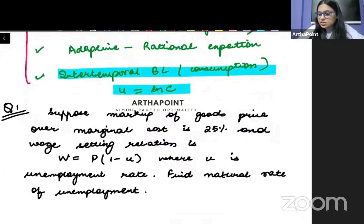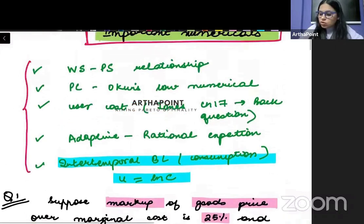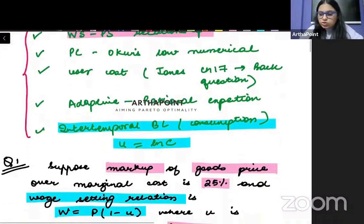So this example is from weight setting, price setting relationship. It says that there is a markup of goods and the markup is 25 percent. And then they have given you a weight setting relationship. And they are asking you to calculate the natural level of unemployment. This can be the first kind of question that can be asked in exam. So in this, it's simple - you need to find the natural rate of unemployment. This is based on your weight setting, price setting relationship.